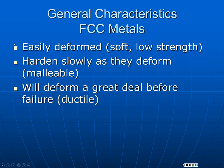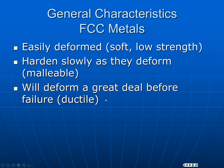To summarize FCC metals: they are easily deformed — soft, with low strength and low hardness as you saw in lab. In addition, they do not harden rapidly as they deform, so we say they are malleable. Almost all materials become stronger as you deform them, but FCC materials do that at a very slow rate, so you can easily draw them into wire, film, or foil. The other property that falls out of this FCC structure is ductility — you can deform them a lot before they fail. Get these terms straight: soft means low hardness; malleable means they don't become more difficult to deform; ductility is how much you can deform them before failure.